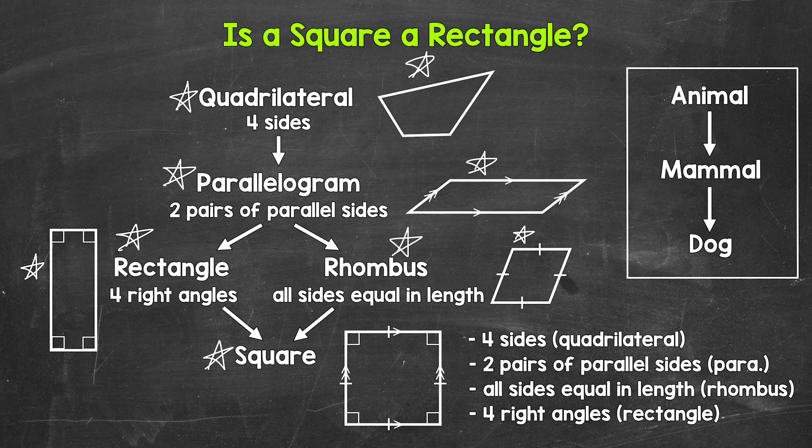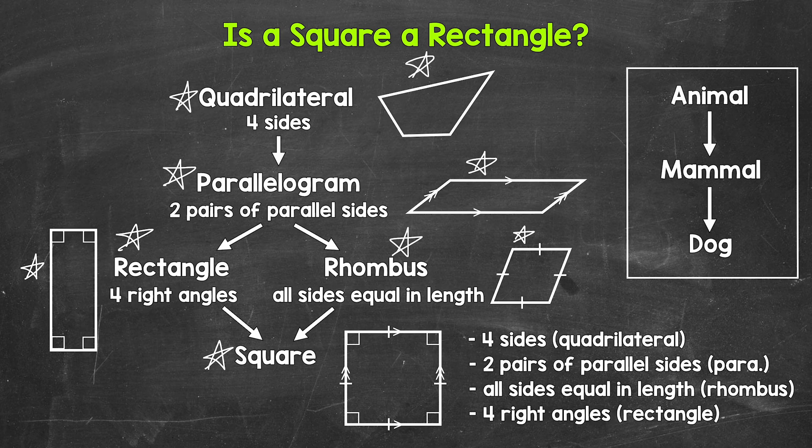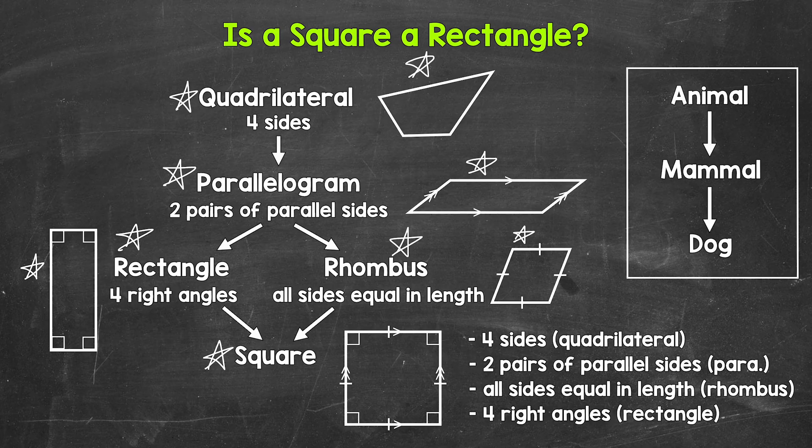Squares have four right angles. Squares have all of the features or all of the properties that rectangles do. Squares are rectangles. A square is just basically a more specific or special rectangle because squares have to have all four sides the same length. Rectangles do not. So could you call a square a rectangle? Sure, you could. But that's not the best name. It's not the most specific or fitting. Square is.